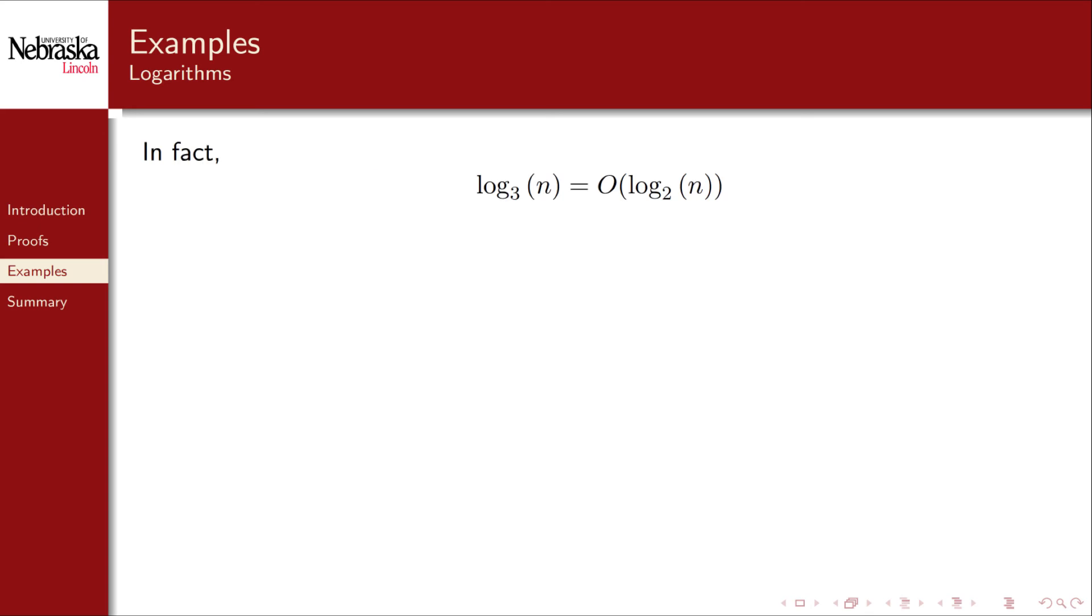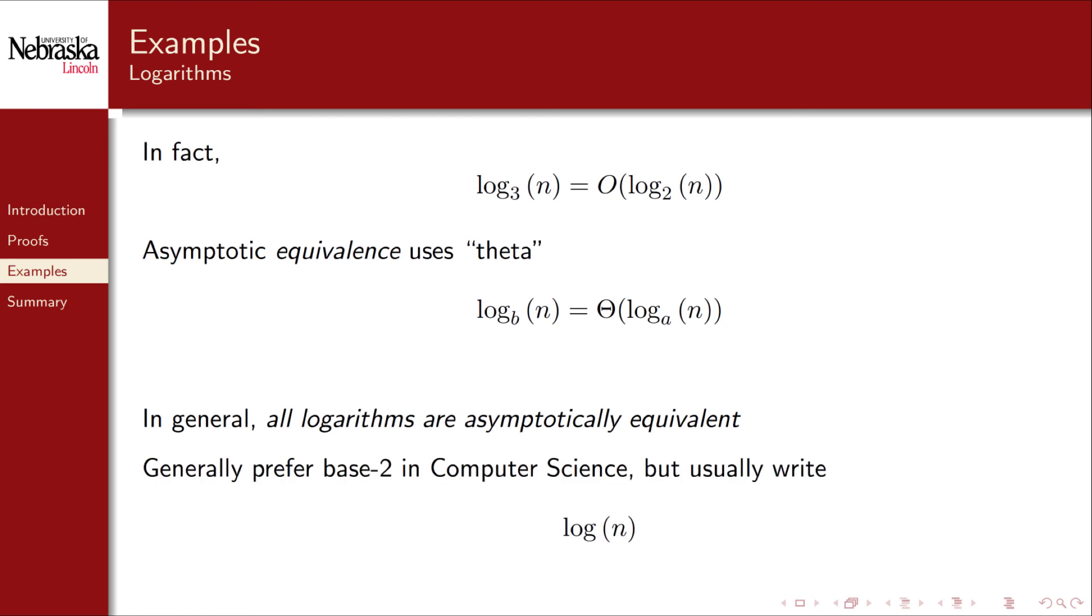Note that we had to use 1 for n naught as the log function is undefined at zero. In fact, we could have shown the other way around as well due to the change of base formula. It would actually show the asymptotic equivalence between these logarithm functions or a big theta characterization. In general, all logarithms are asymptotically equivalent to each other. Generally, in computer science, we prefer to use log base 2 or binary and we'll usually write log of n with no explicit base because this is an asymptotic equivalency to any other log base. For the definition of big theta, refer to the text or to one of the supplementary videos.